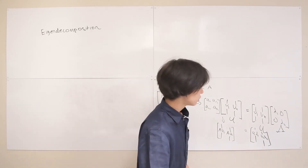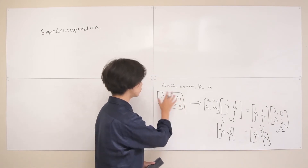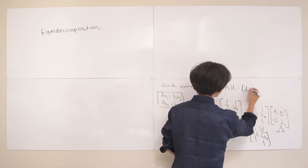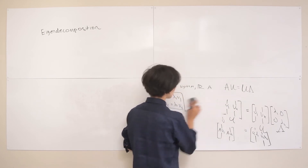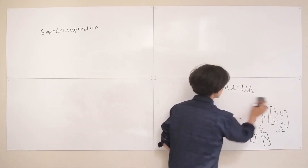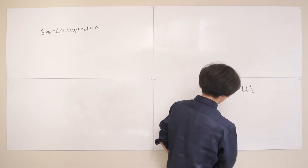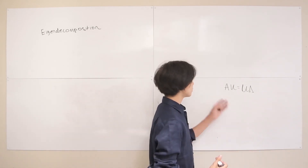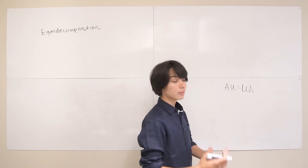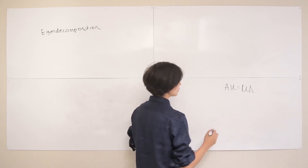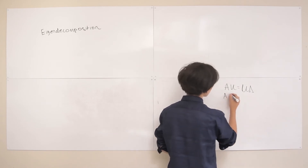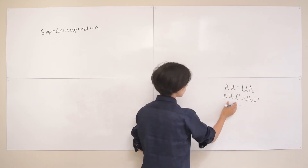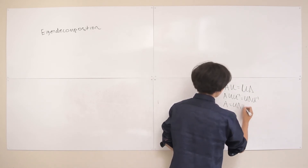Now that we can express the two equations as the matrix equation AU equals U lambda, let's use some matrix algebra to simplify further. To isolate A, we multiply both sides by U inverse — similar to dividing both sides. So U U inverse gives us A equals U lambda U inverse.